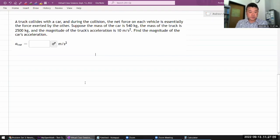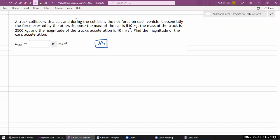Okay, so this question says a truck collides with a car. There's some kind of collision, so I'm just going to draw two masses that are somehow interacting. The net force on each vehicle is essentially the force exerted by the other. That makes things simpler, so let me start drawing a free body diagram. I'm going to draw a free body diagram of one, which would be my truck.